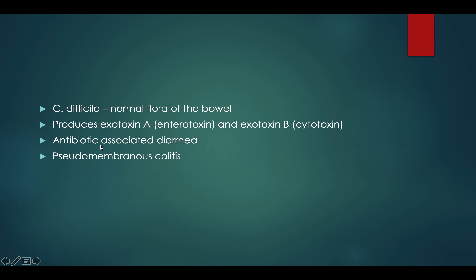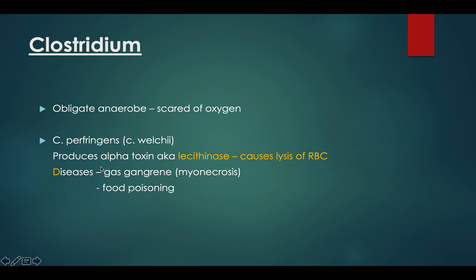We study three species in Clostridium: C. perfringens, C. difficile, and C. tetani. C. perfringens is also known as C. welchii. It is famous for producing the enzyme lecithinase and for causing gas gangrene or myonecrosis, which you see in severely diabetic patients. The lecithinase — also called alpha toxin — lyses RBCs.